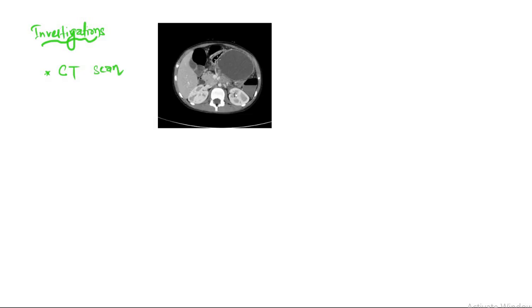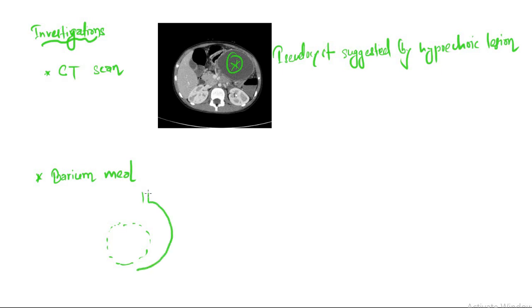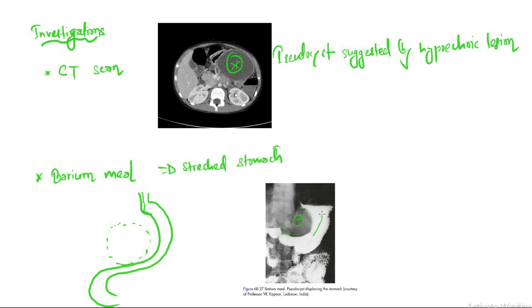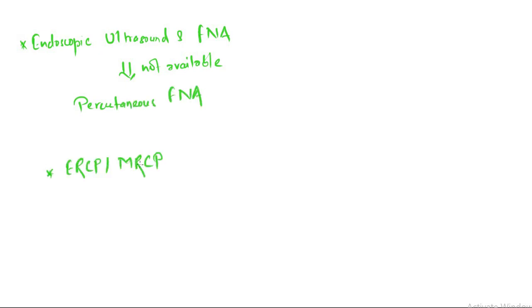As I already said, CT scan: pseudocyst is suggested by a hypodense collection. Barium meal can be done—you can see a stretched stomach pushed by the pseudocyst. Here, this is the pseudocyst and this is the stretched stomach on barium meal. Endoscopic ultrasonography and fine needle aspiration can be performed, or if not available, percutaneous FNA as I told before.